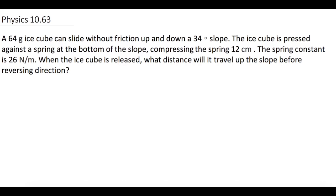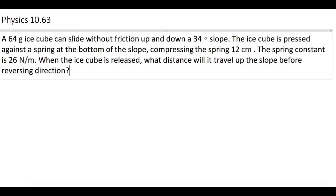A 64-gram ice cube can slide without friction up and down a 34-degree slope. The ice cube is pressed against a spring at the bottom of the slope, compressing the spring 12 centimeters. The spring constant is 26 newtons per meter. When the ice cube is released, what distance will it travel up the slope before reversing direction?